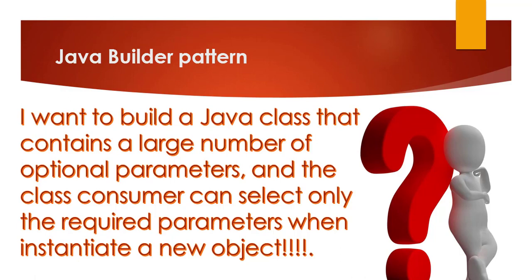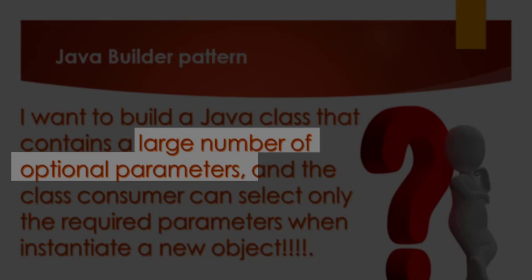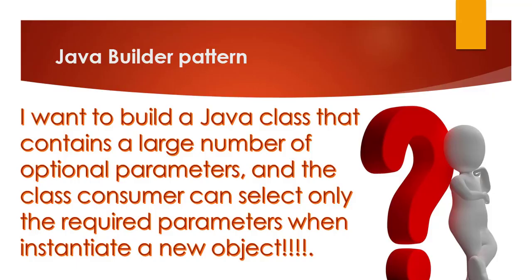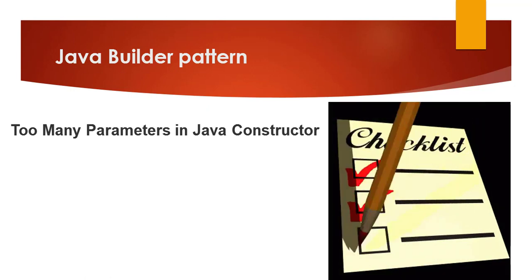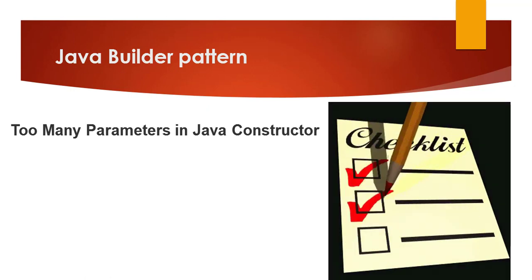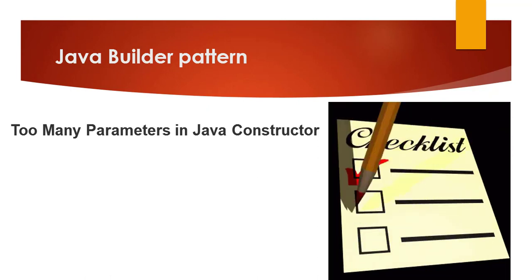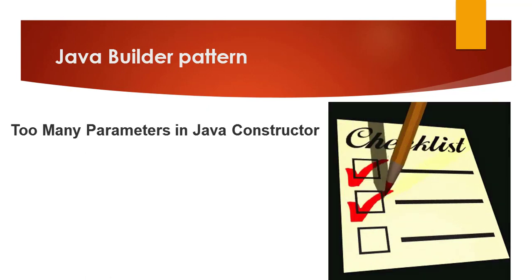Now we have a problem. We have a big class that contains a large number of optional parameters. Optional parameters means the consumer can use all these parameters, or can use the class without parameters, or can use some of these parameters — maybe one or more. Our problem is we have a class with too many parameters in our constructor, but the consumer needs to choose only one, more, all, or none.